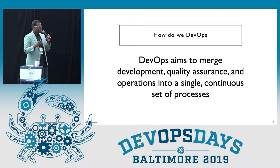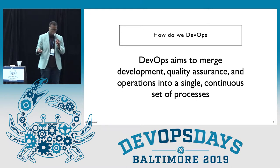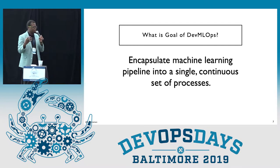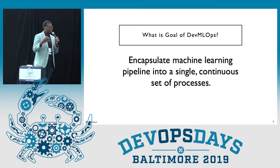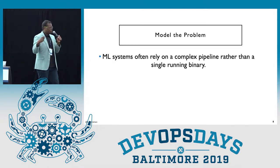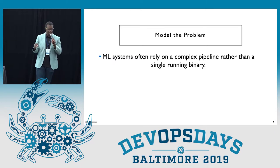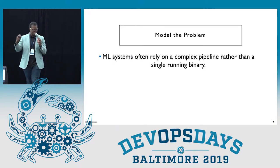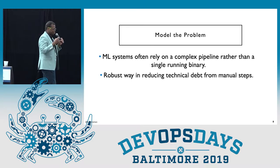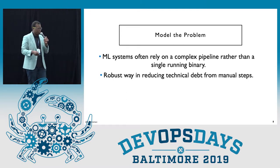When we talk about DevOps, we want to merge the development, quality assurance, and operations in a single continuous process. When it comes to machine learning, we want to encapsulate that machine learning pipeline into a single continuous set of processes. We want to model the problem — machine learning systems are a complex pipeline, instead of just a single binary application. We want a robust way to reduce technical debt in each part of the pipeline, from gathering data, to training the model, and producing that.